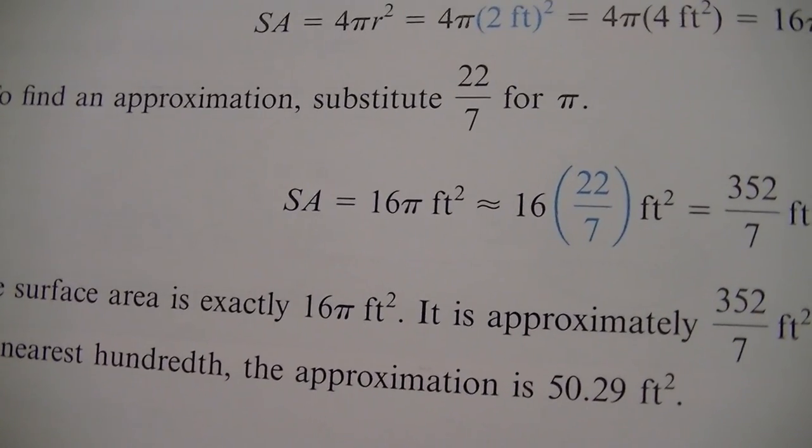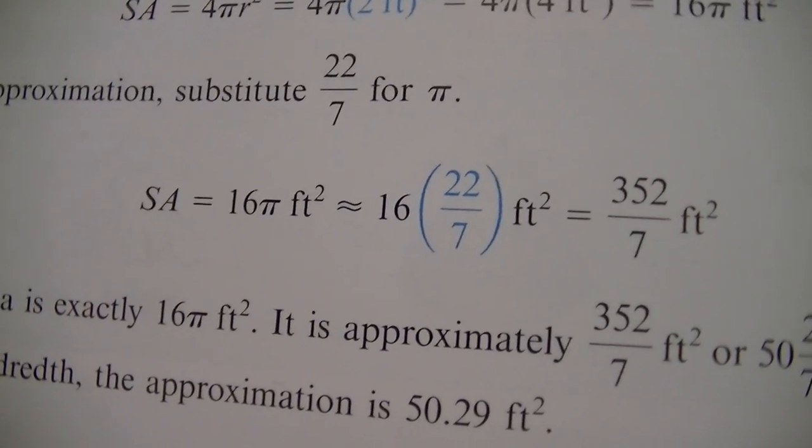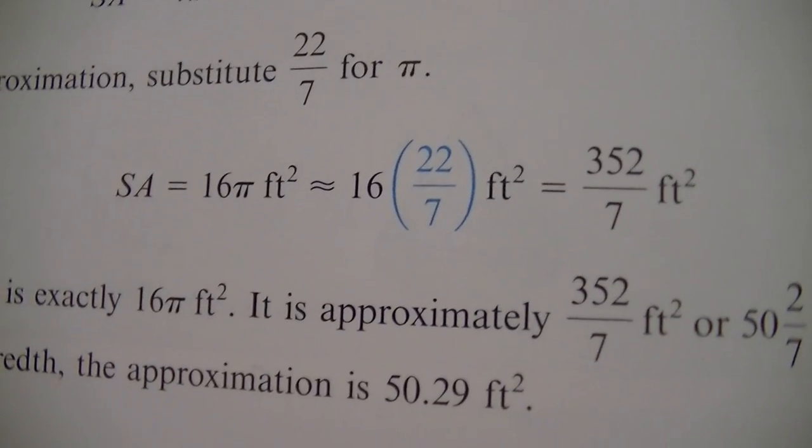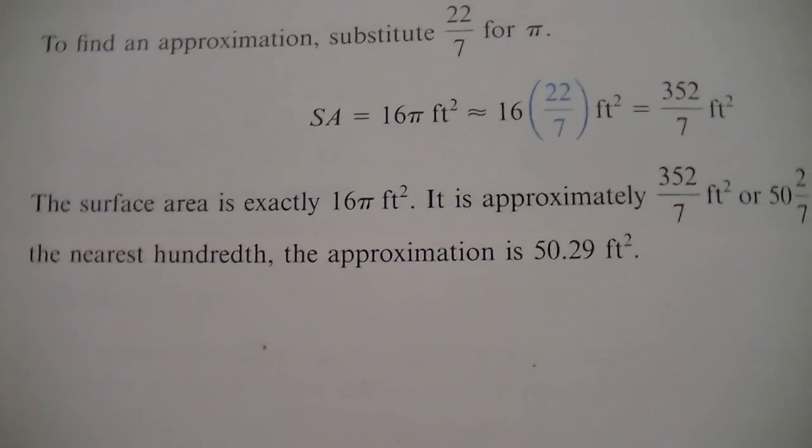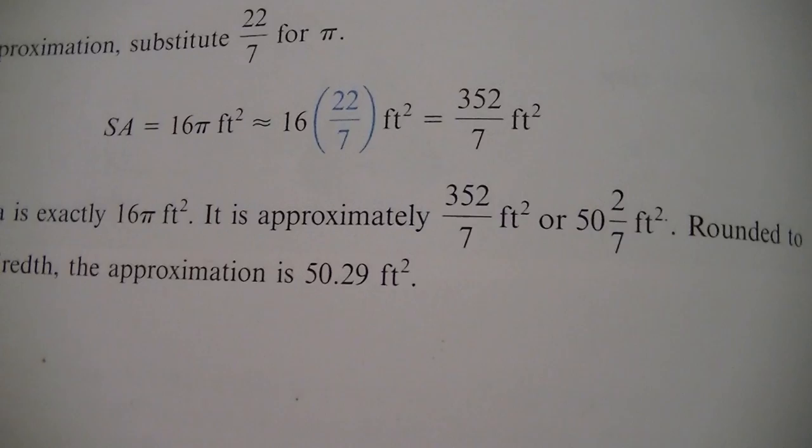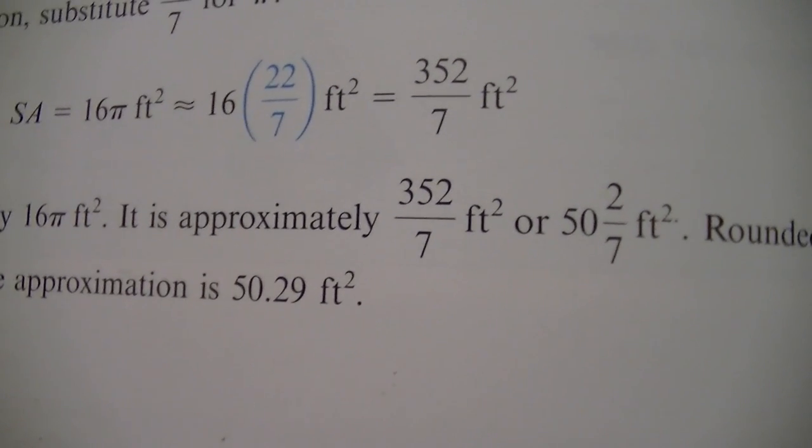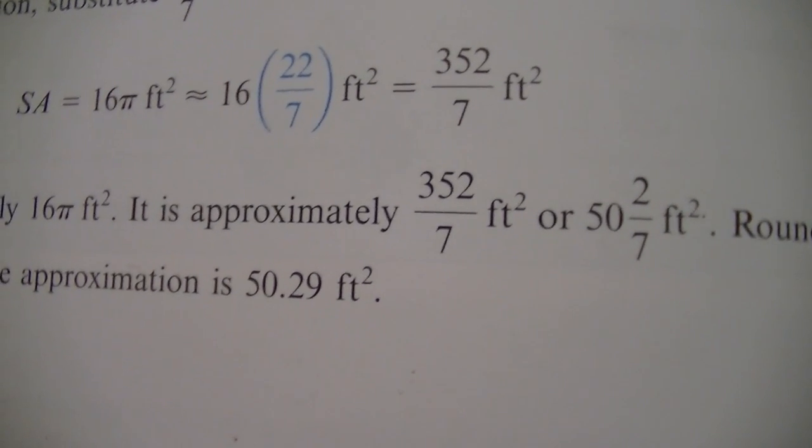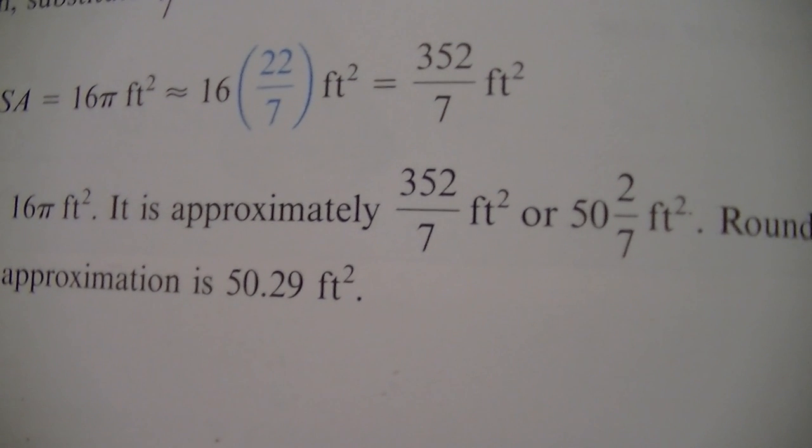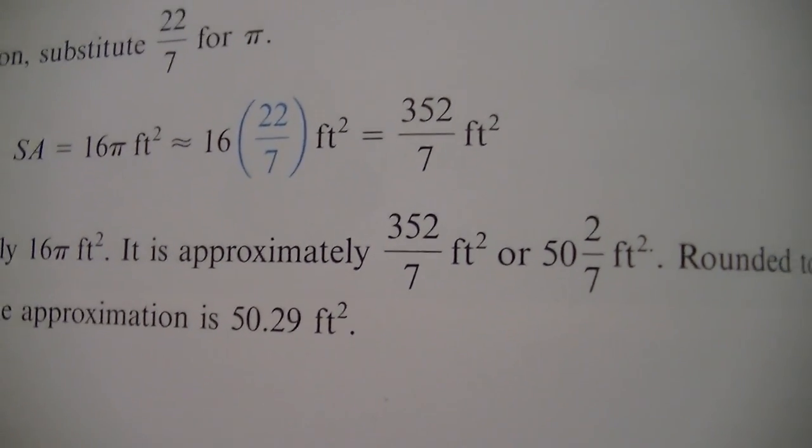And we're going to say 16, which is the same as 16 over one times 22 over seven. Top numbers multiply together. So 16 times 22 gives us 352 on the top over seven on the bottom. Now it says the surface area is exactly 16 pi feet squared. It is approximately 352 over seven. And when we have that top number larger than the bottom number, we're going to turn it into a mixed number. So we say how many times can seven go into 352? About 50 times. We have two left over, our bottom number stays the same, which is seven. So that's how they get 50 and two over seven feet squared.